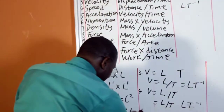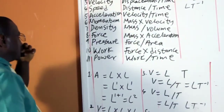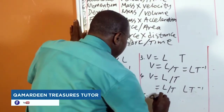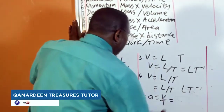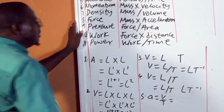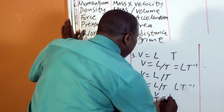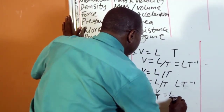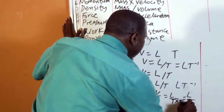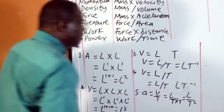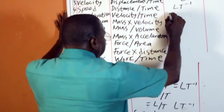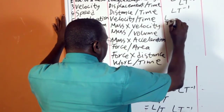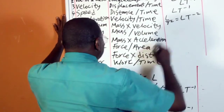Number 5 is acceleration. Acceleration is velocity over time. Our velocity is L over T, divided by T. This gives us L over T squared, or LT raised to power minus 2.